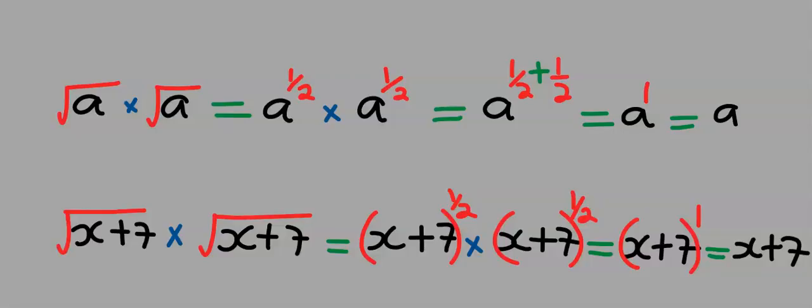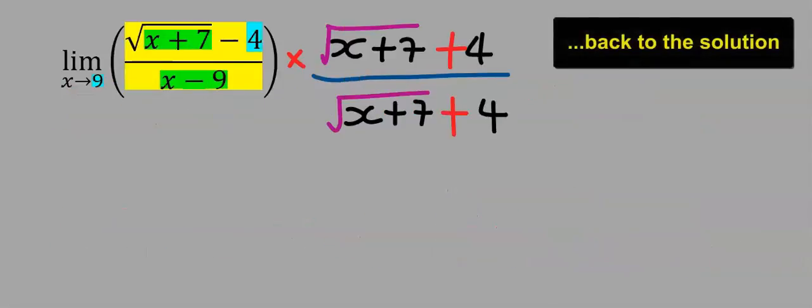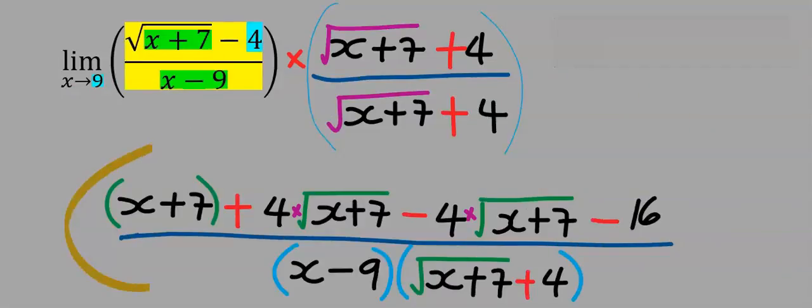We are going to apply this to the function. Hence this function becomes square root of x plus seven times square root of x plus seven, which gives us x plus seven.